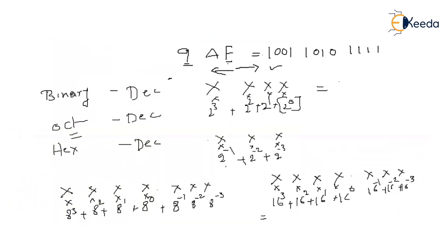Ensure the binary representation has at least 4 digits for each hexadecimal digit. For example, hexadecimal digit 1 converts to 0001, and hexadecimal digit 2 converts to 0010 — not just 10. Every hexadecimal digit must have exactly 4 binary digits.